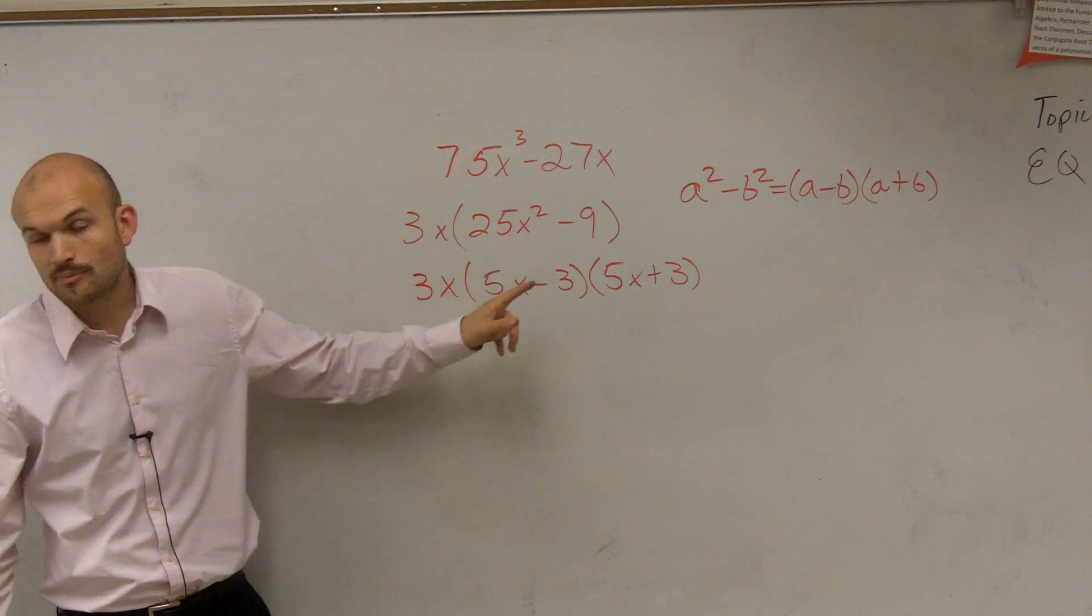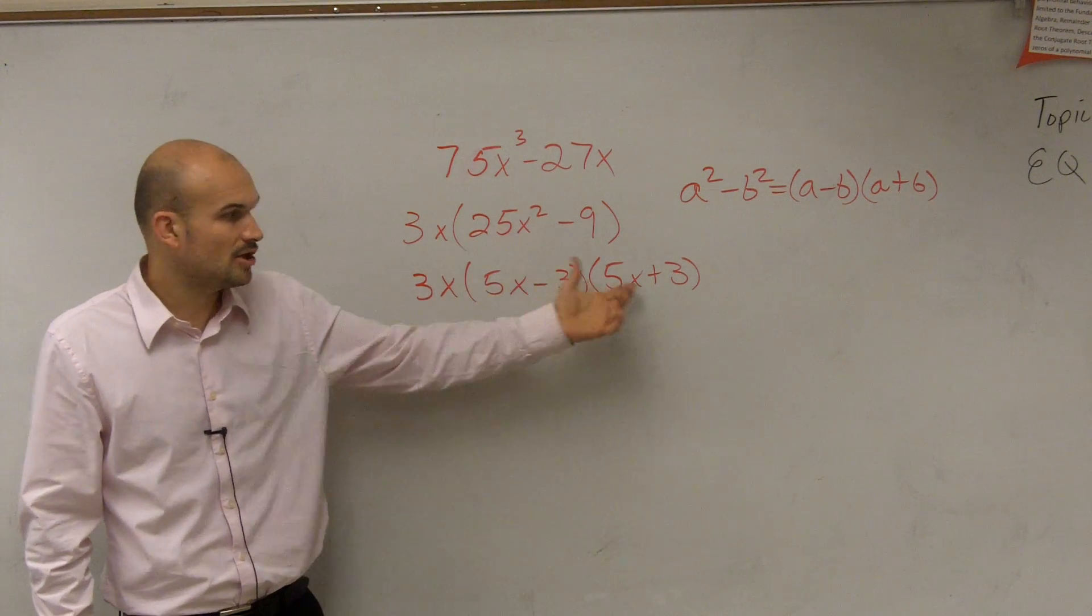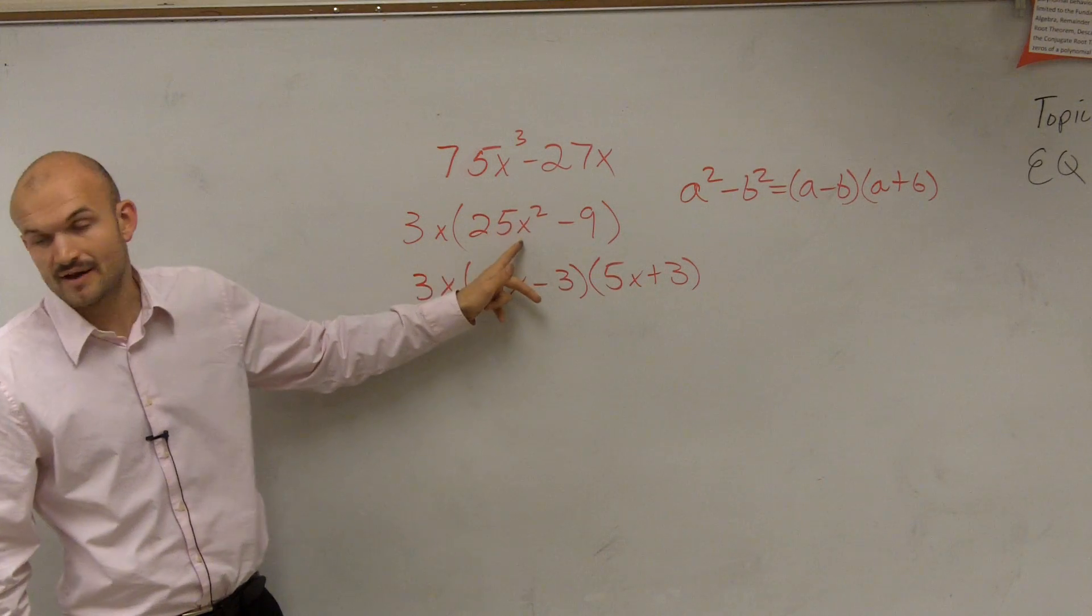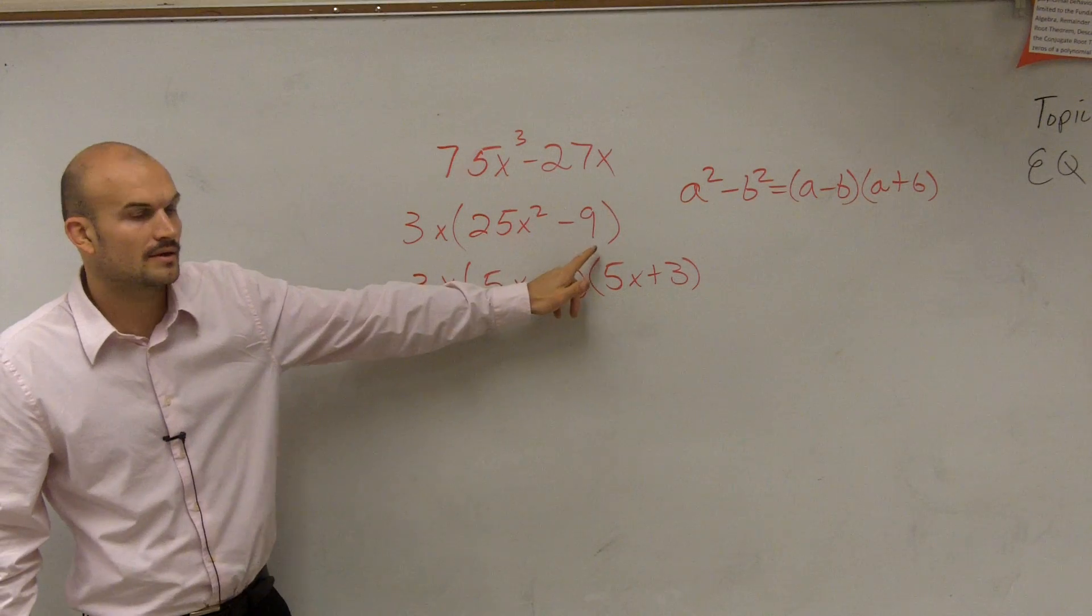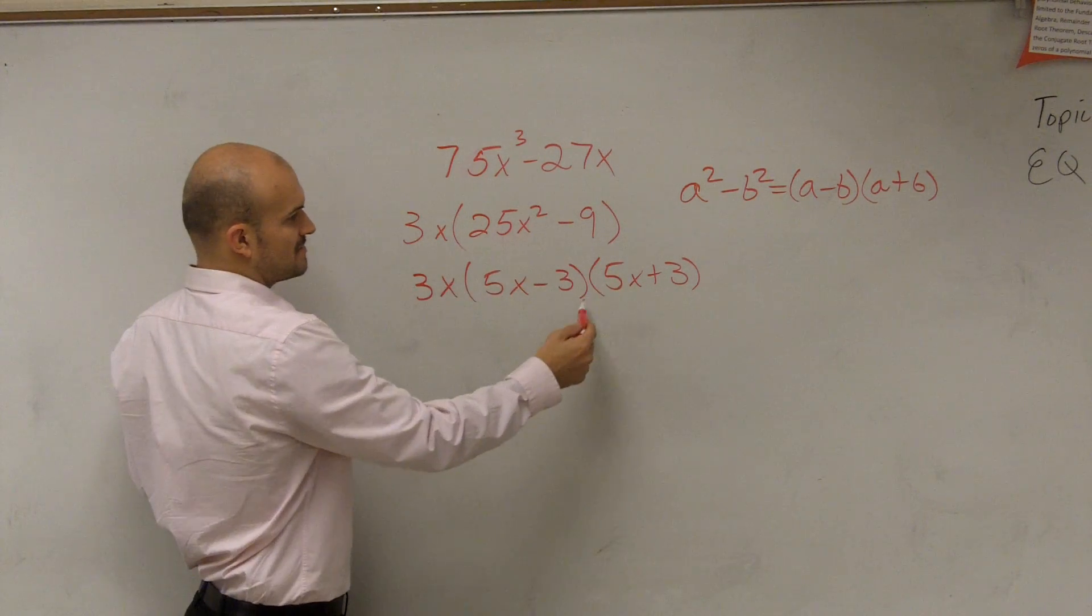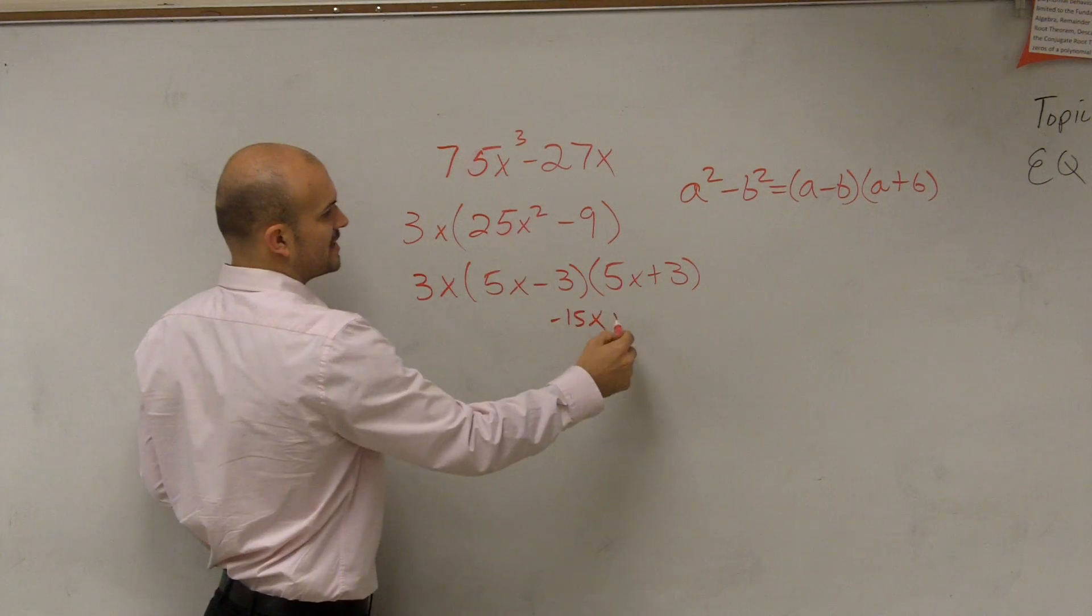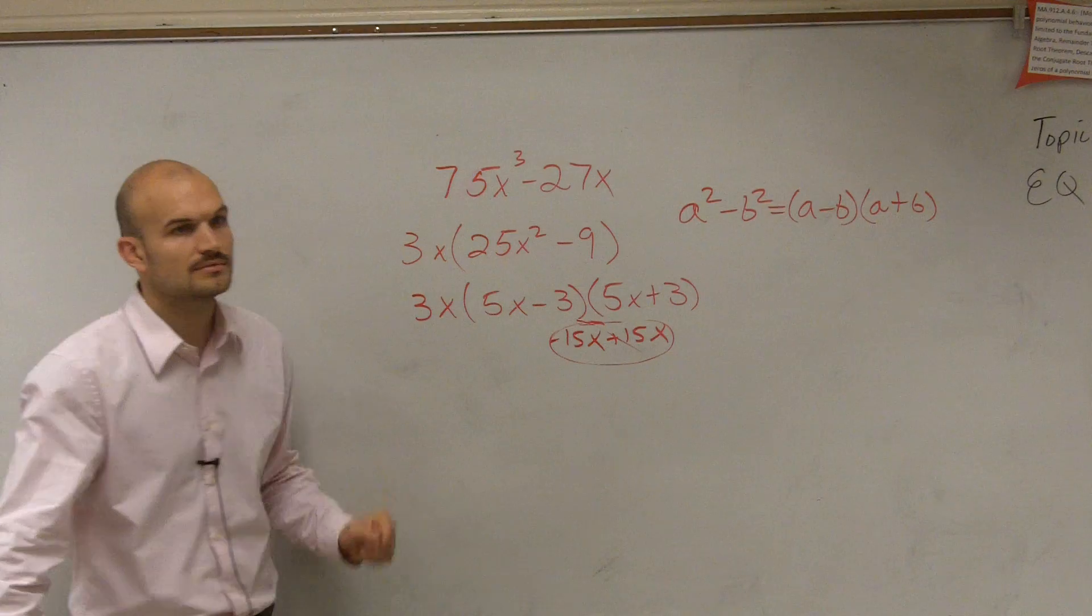Well, remember, when we factored out, that means all you've got to do is multiply them to get back to it. So does 5x times 5x give you 25x²? Yes. Does -3 times +3 give you -9? Yes. Does -3 times 5x give you -15x? And does 5x times 3 give you +15x, which go out to 0? Right?